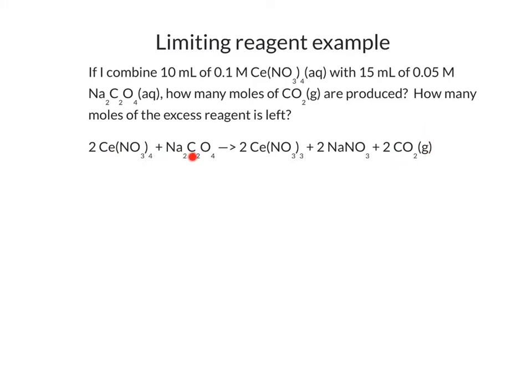Whichever one isn't limiting — if one of them is limiting, the other one has to be excess. That's going to be left over, and we need to figure out how much we used up and subtract that from how much we had to figure out how much is left. We're going to start by doing what we always do with stoichiometry problems: find the number of moles of each reagent that we have available.